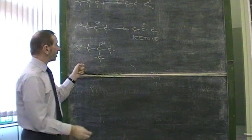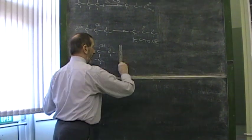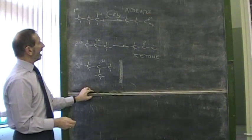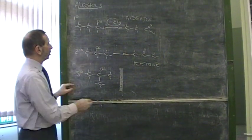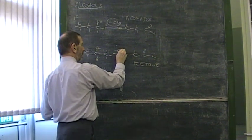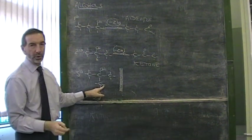And the tertiary alcohol, you might remember, went nowhere. We couldn't oxidize this, and that's because it cannot lose hydrogens the way that these two do. This can lose two hydrogens. This can lose two hydrogens. This one is not able to lose two hydrogens.